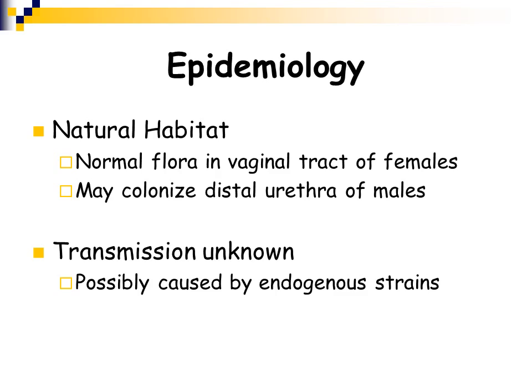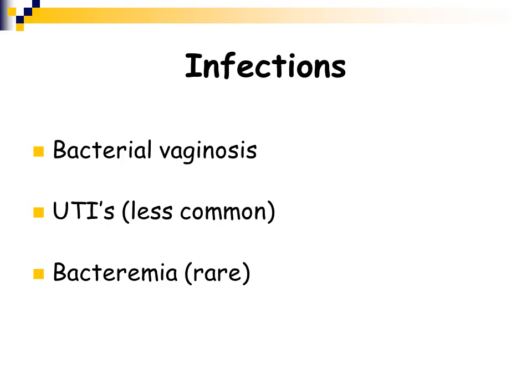Gardnerella vaginalis can be normal flora in the vaginal tract of females, but its growth is suppressed by Lactobacillus acidophilus normal flora. It can also colonize the distal urethra of males. Transmission is not specifically known but is thought to be possibly endogenous, meaning an individual transmits the organism from their own normal flora. The most common infection Gardnerella vaginalis causes is bacterial vaginosis.